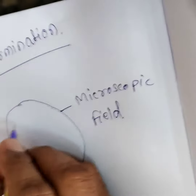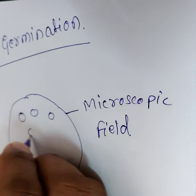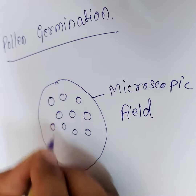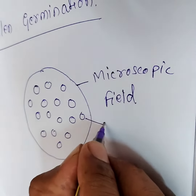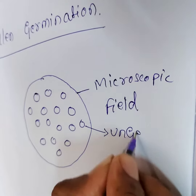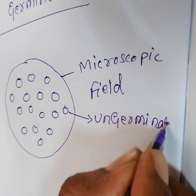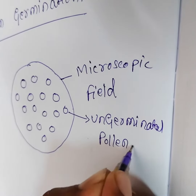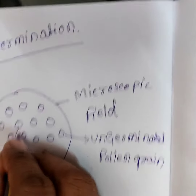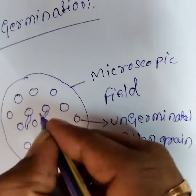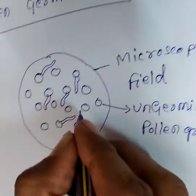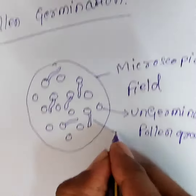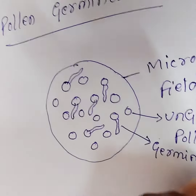Microscopic field — what we have to do here is the pollen grains. Round, round shape — round shape is pollen grains. What we have to do here is un-germinated pollen grains. Un-germinated pollen grains.